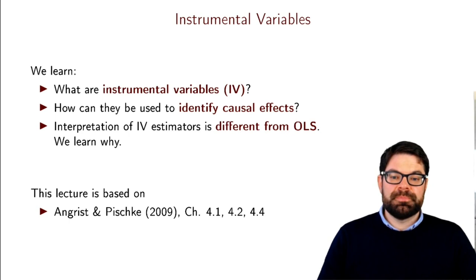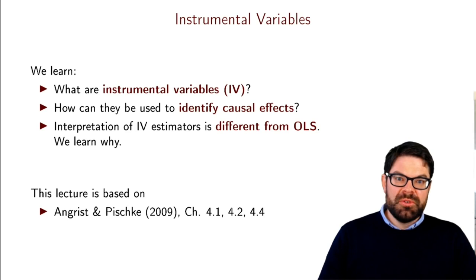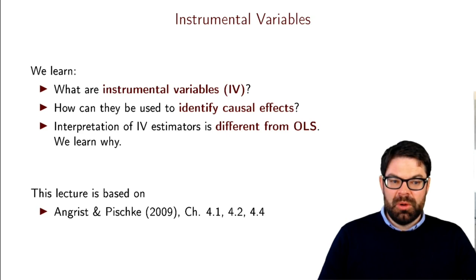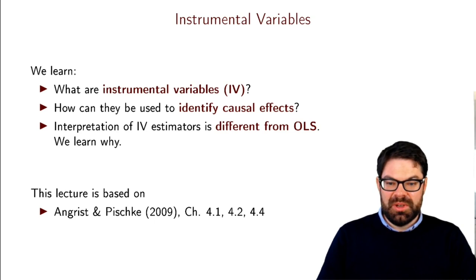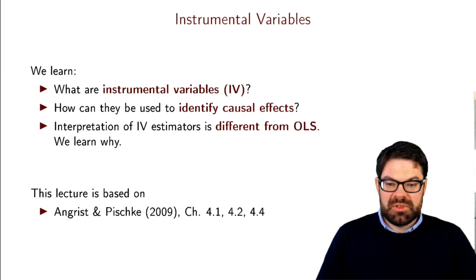As we will see, instrumental variables are very useful because they can overcome a severe endogeneity problem, but they also estimate a different parameter relative to an OLS regression. Therefore, we need to know what that parameter is in order to understand what we are actually doing. If you want to go deeper into the material, I recommend the chapters in Angrist and Pischke and also in the Causal Inference Mixtape, which should be the starting point when reading about this technique.